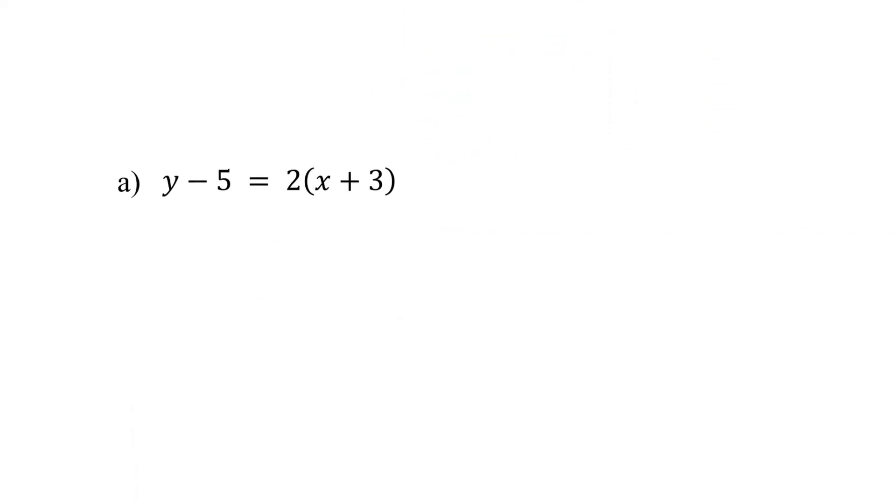Now, let's go through our examples to see how to make this conversion. The first step is to distribute the slope to each term inside the parentheses. So, in this example, distribute the two.